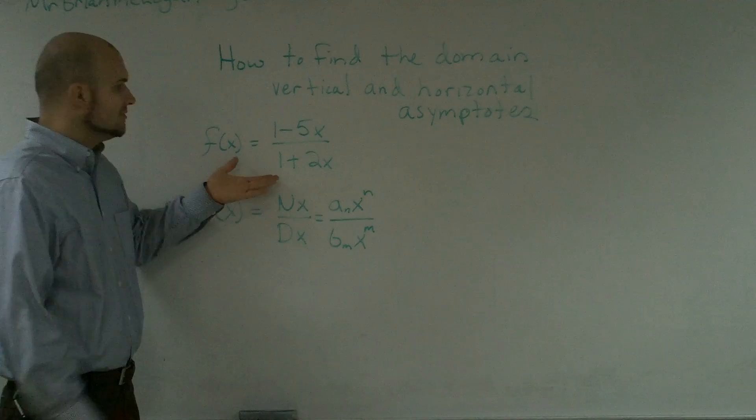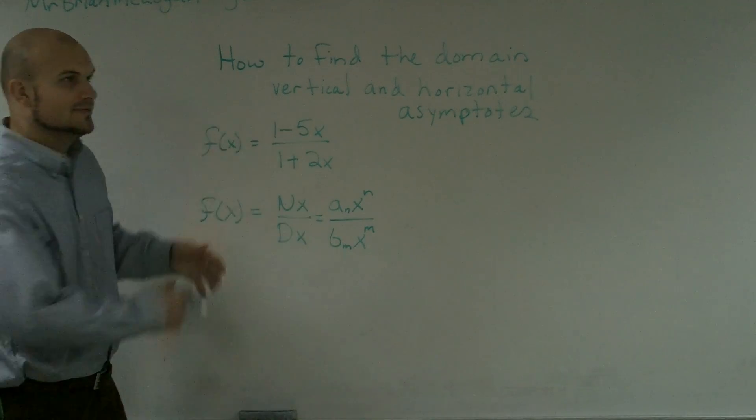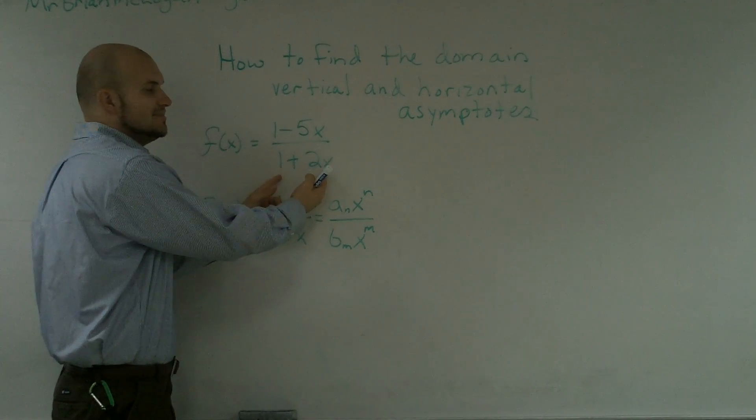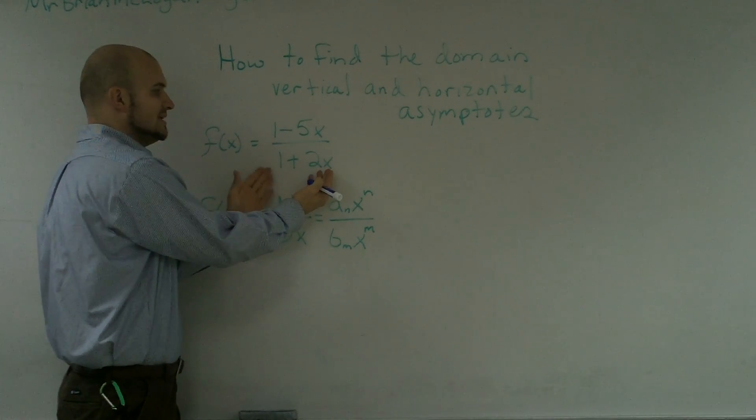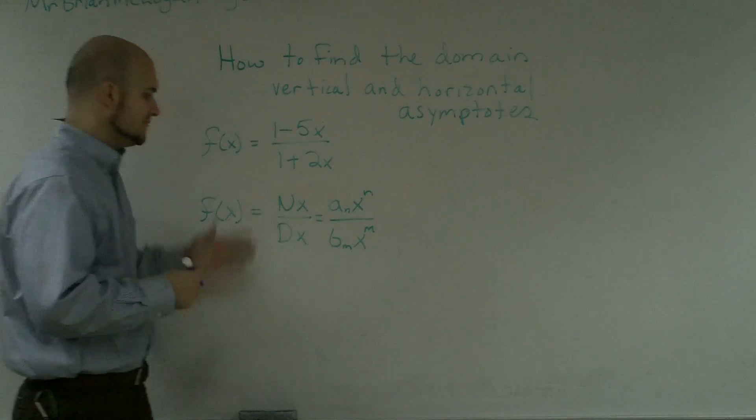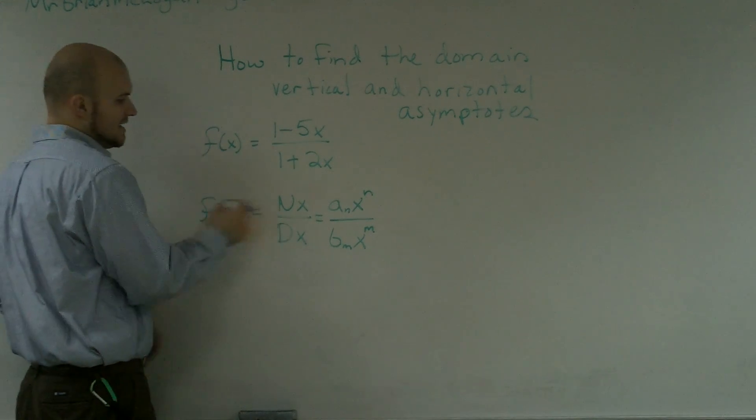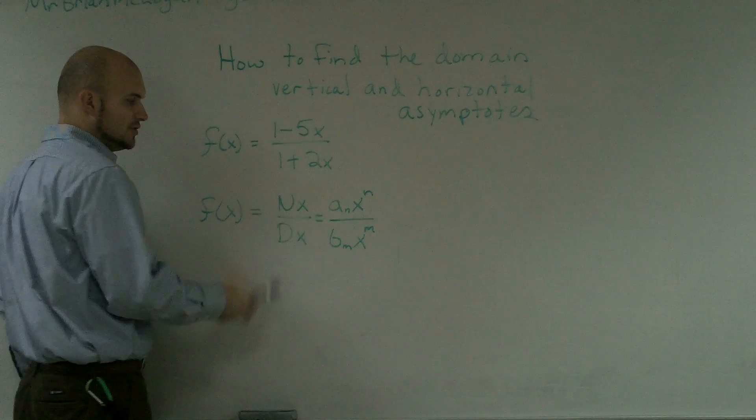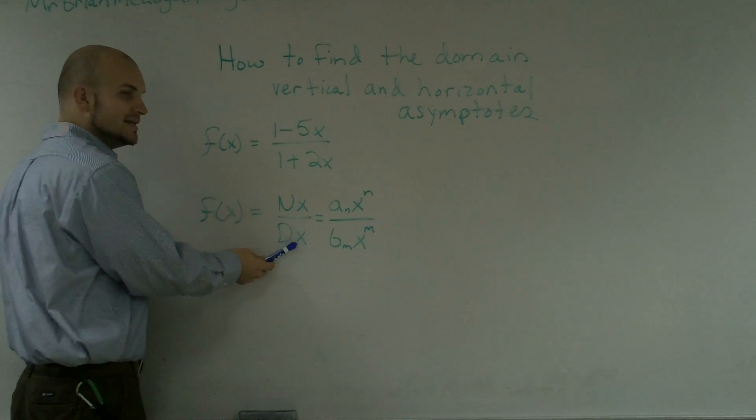The first thing when dealing with domain is we need to set our denominator to zero. That's my rational function. I have two polynomials, so we have an n(x) and a d(x).